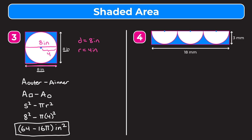In our last example we have a rectangle with three semicircles cut out of it. We need the area of the outer shape minus the area of the inner shapes — and this time we have three inner shapes. The outer shape is a rectangle, and since all three semicircles are the same size, we can write three times the area of a semicircle. The area of a semicircle is one half times pi times r squared.